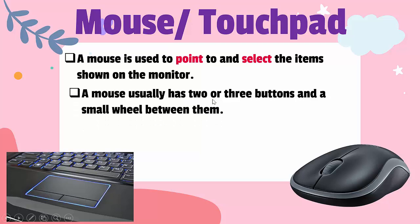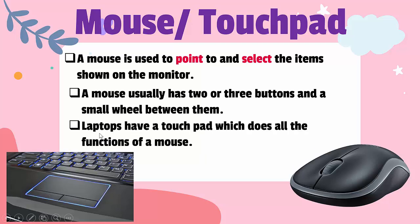A mouse usually has two or three buttons and a small wheel between them. There is a left button, a right button, and a small wheel between them. This wheel is used to scroll the screen. Laptops have a touchpad which does all the functions of a mouse. In laptops there is already an inbuilt touchpad, so we can use this as a mouse. There is also a left button and a right button.